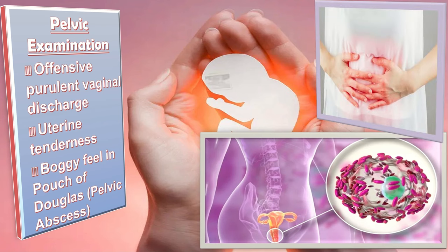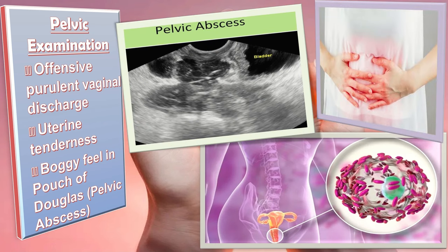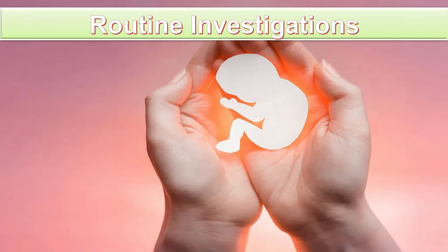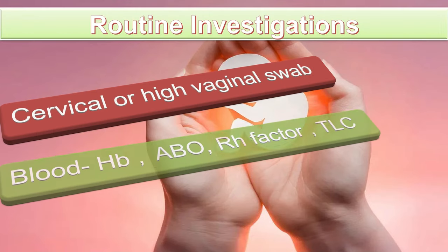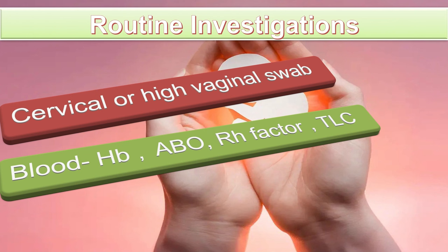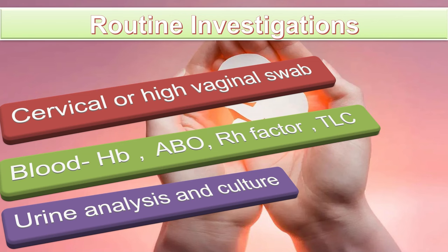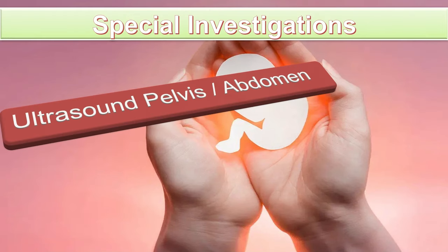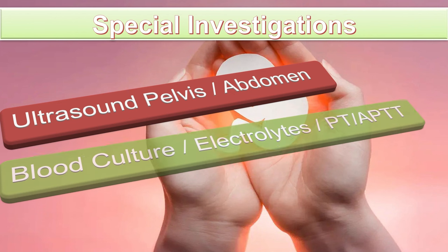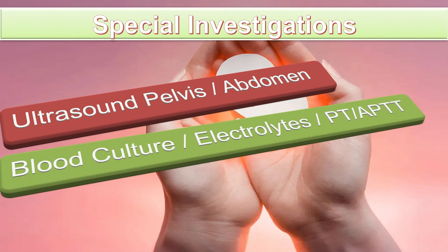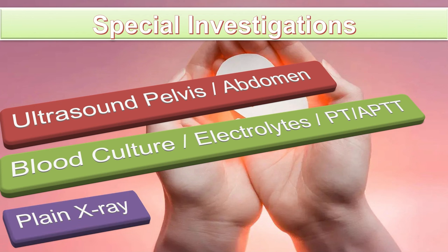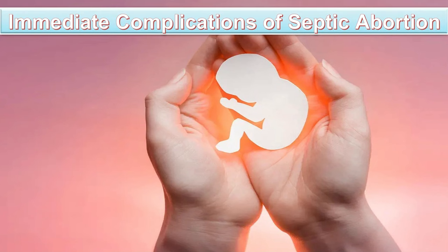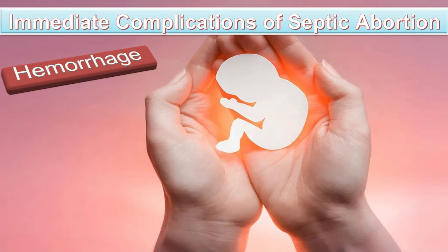On pelvic examination there can be offensive purulent vaginal discharge, uterine tenderness, and a boggy feel in the pouch of Douglas due to pelvic abscess. Routine investigations include cervical or high vaginal swabs, blood tests for hemoglobin, ABO/Rh factor, and total leukocyte count, urine analysis and culture. Special investigations include pelvic and abdominal ultrasonography, blood culture, serum electrolytes, PT/APTT levels, and plain X-ray of the abdomen and chest.